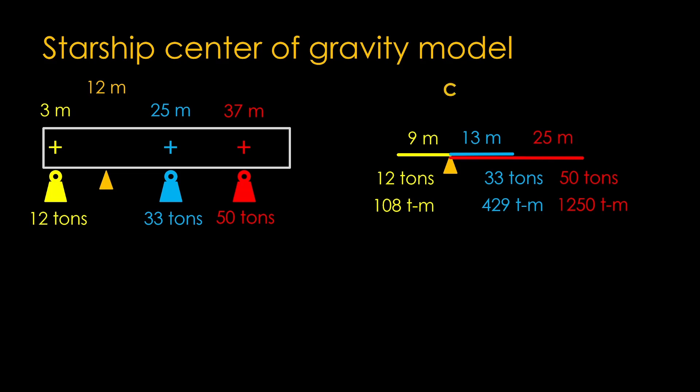If we define C to be the distance of the fulcrum from the left side, we can write the contribution of each mass in terms of that distance. For the first term, it's 12 tons times 3 minus C meters. Note that that gives a negative torque, because the weight is to the left of the fulcrum. The vehicle is 33 tons times 25 minus C meters, and the payload is 50 tons times 37 minus C meters. Add these up, and we get the net torque, how much the forces are twisting the rocket. Our goal is for all these forces to balance, and for the net torque to be zero.